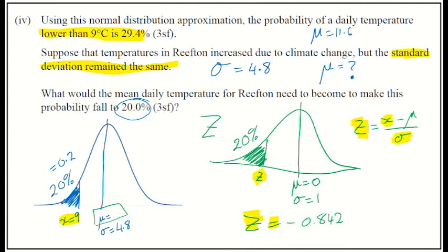So, that's what I want to do now, is substitute in and rearrange that equation. So, let me just jump to a fresh slide. And so, we've got z equals x minus the mean over that. And our z value is negative 0.842. Our x value is 9. And our standard deviation is 4.8.